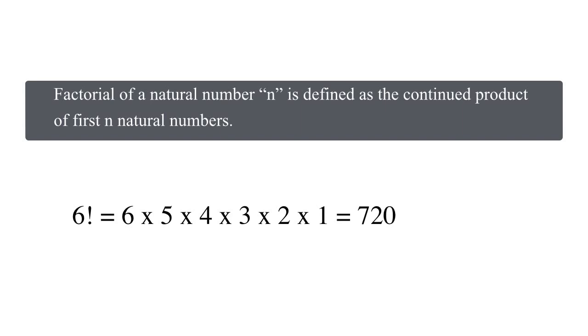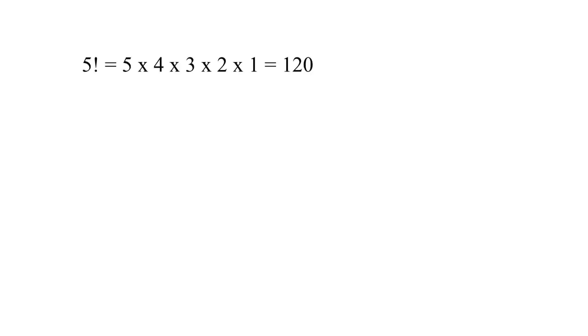So in the light of what we just learnt, 5 factorial is equal to 5 into 4 into 3 into 2 into 1 equals 120. 8 factorial is equal to 8 into 7 into 6 into 5 into 4 into 3 into 2 into 1 equals 40,320.